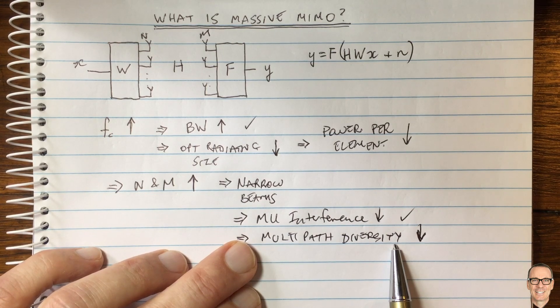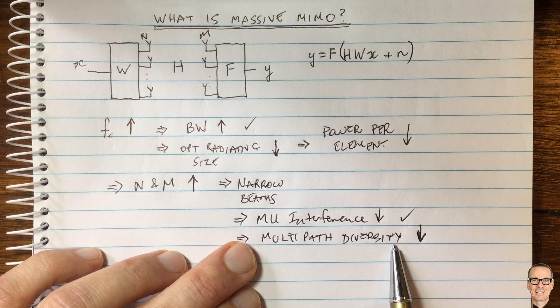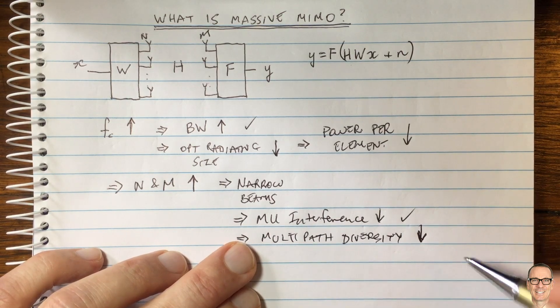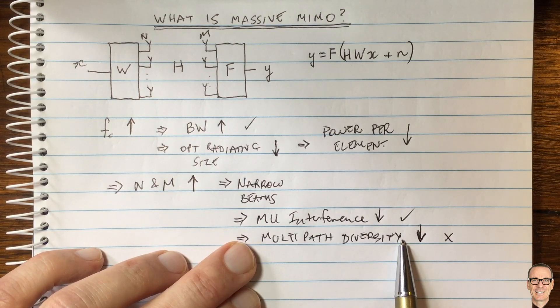When the beams are wider, there's much more chance that you're going to have bouncing off lots of different walls getting to a particular user providing diversity. This is a negative aspect of massive MIMO and something that needs to be thought of in the system design.